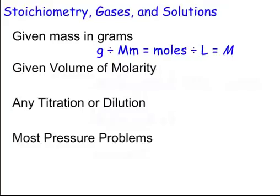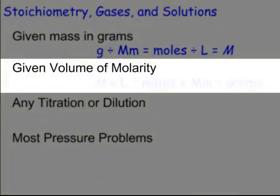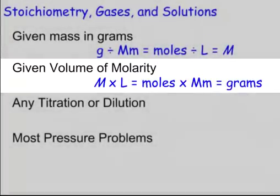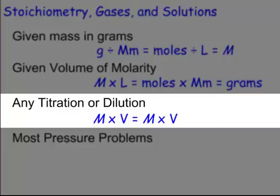If you're given volume of molarity, what does of mean? It means multiply, so we can multiply to find our moles, and then multiply to find our grams by our molar mass. Any titration or dilution, what are we going to do? M1V1 equals M2V2. That's where we find our moles are equal.